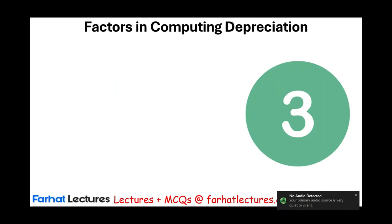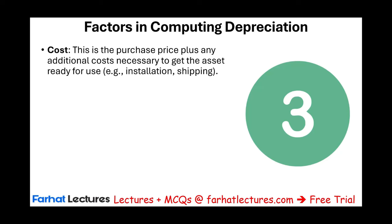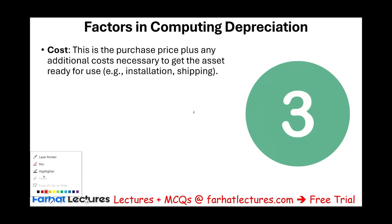Let us start by looking at the factors — the elements — that we need in order to compute depreciation. You need three factors to compute depreciation. The first factor is cost. This is what we looked at in the prior session: determining the cost of an asset. It's the purchase price plus any additional cost necessary to get the asset ready for its intended use, like transportation, installation, shipping taxes, and so on.